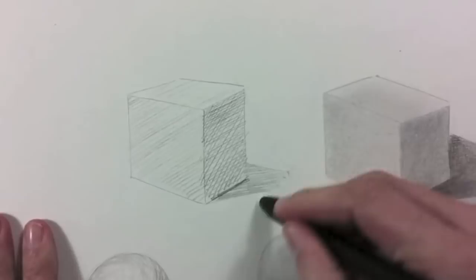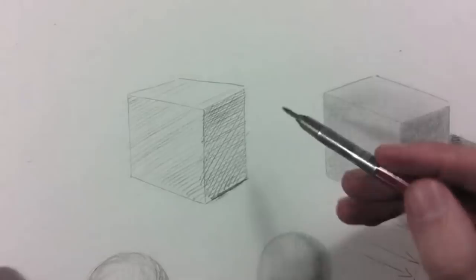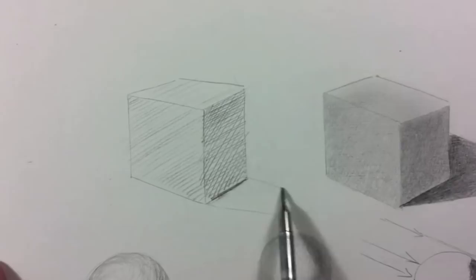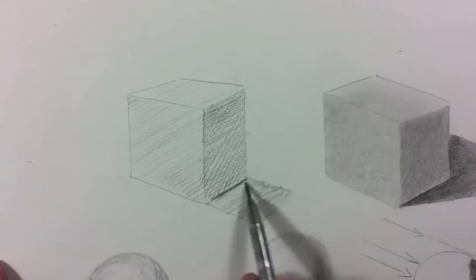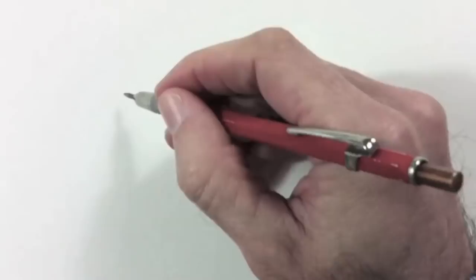But if the light came from the flat side instead of the corner, then it would be different. Let's say that the light came in this direction, then the shadow will be something of this sort. To resolve any questions on this, I recommend to look at an actual object and its shadow.